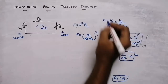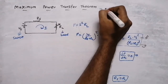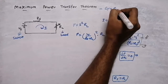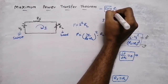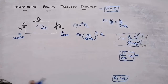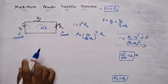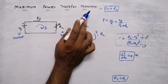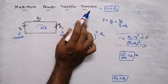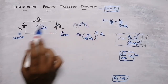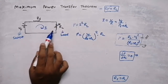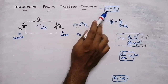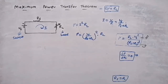So for maximum power transfer, the source resistance should be equal to the load resistance. The maximum power transfer theorem states that maximum power will be transferred from source to load when load resistance is equal to source resistance.